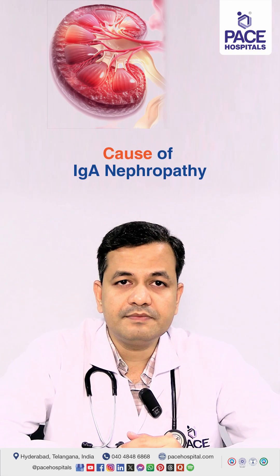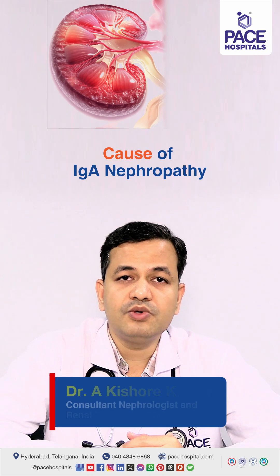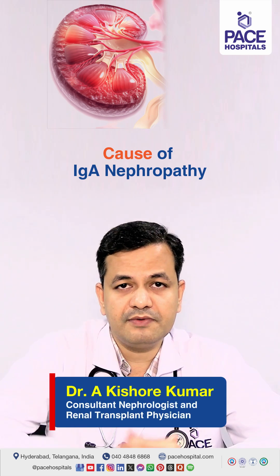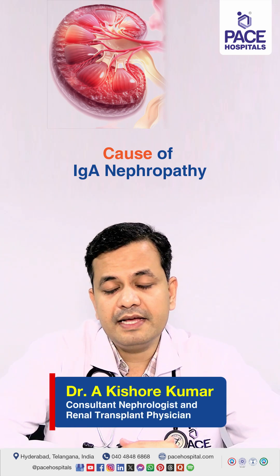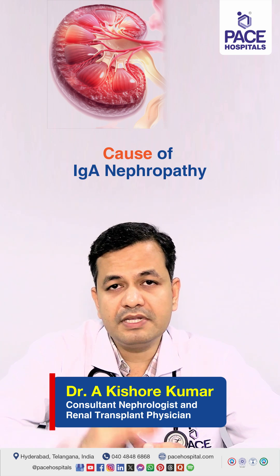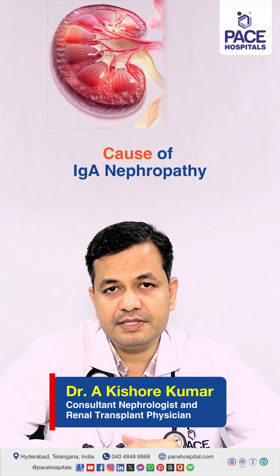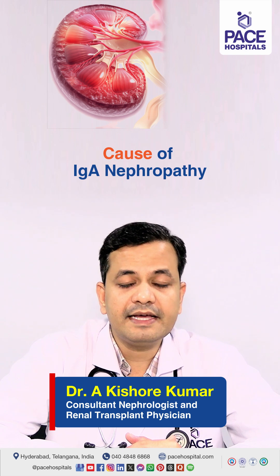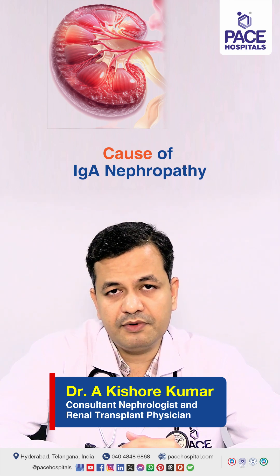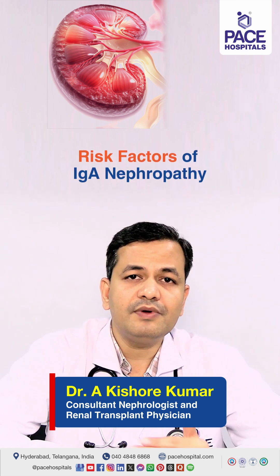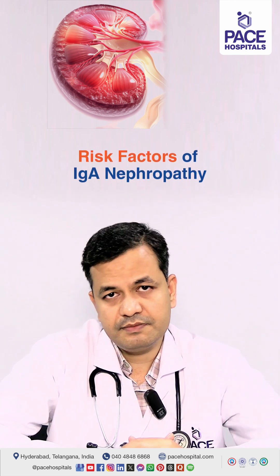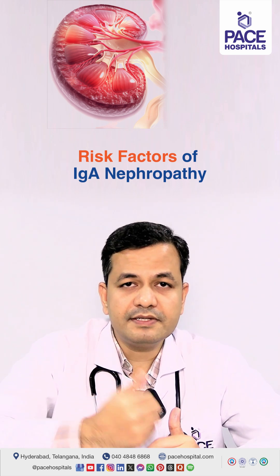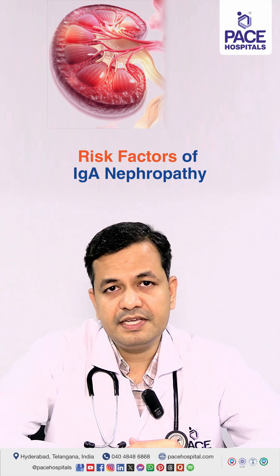Research done to date does not provide a specific cause for IgA nephropathy. We could not pinpoint one single reason for developing IgA nephropathy. This means that any person can be at risk, but there are few risk factors — meaning few people are at increased risk of this condition.